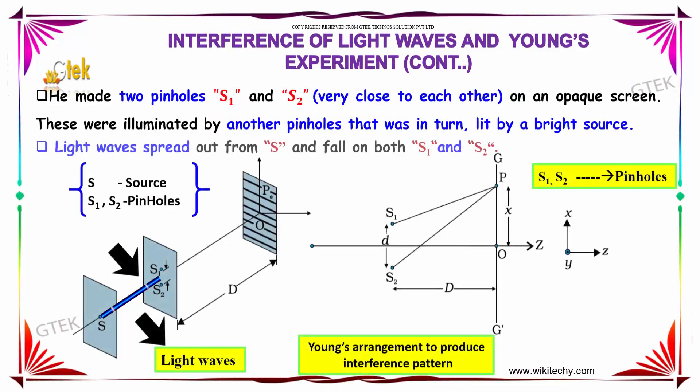He made two pinholes, S1 and S2, very close to each other on an opaque screen. These were illuminated by another pinhole that was in turn lit by a bright source. The light waves spread out from S and fall on both S1 and S2.